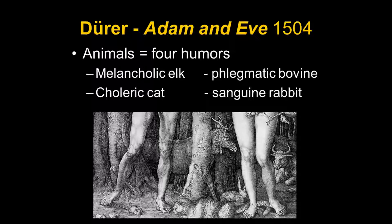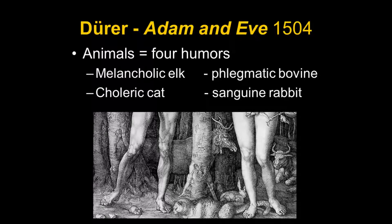The elk represents melancholy, the bovine is phlegmatic, the rabbit is sanguine, the cat is choleric — though you might notice there's a little mouse right there and the cat is not jumping at it. There are two ideas about the animals at the fall of man: some people thought the animals preyed on each other as they do today; some thought they lived in peace and harmony until human beings brought sin into the world and then they started to prey on each other. That seems to be the idea Dürer is showing here.